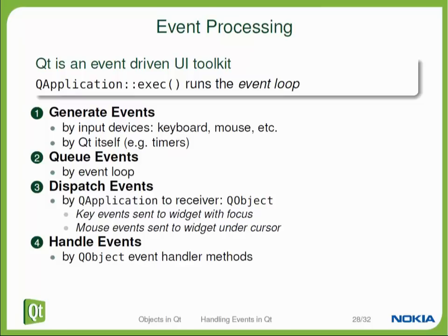The events in the event queue are processed in the order they were received. Some of them will not be processed at all, but they will not bypass other events. Every event has a specific receiver, which is a Qt object of any kind, and when the event is processed by the event loop, it will be handed to that receiving object.